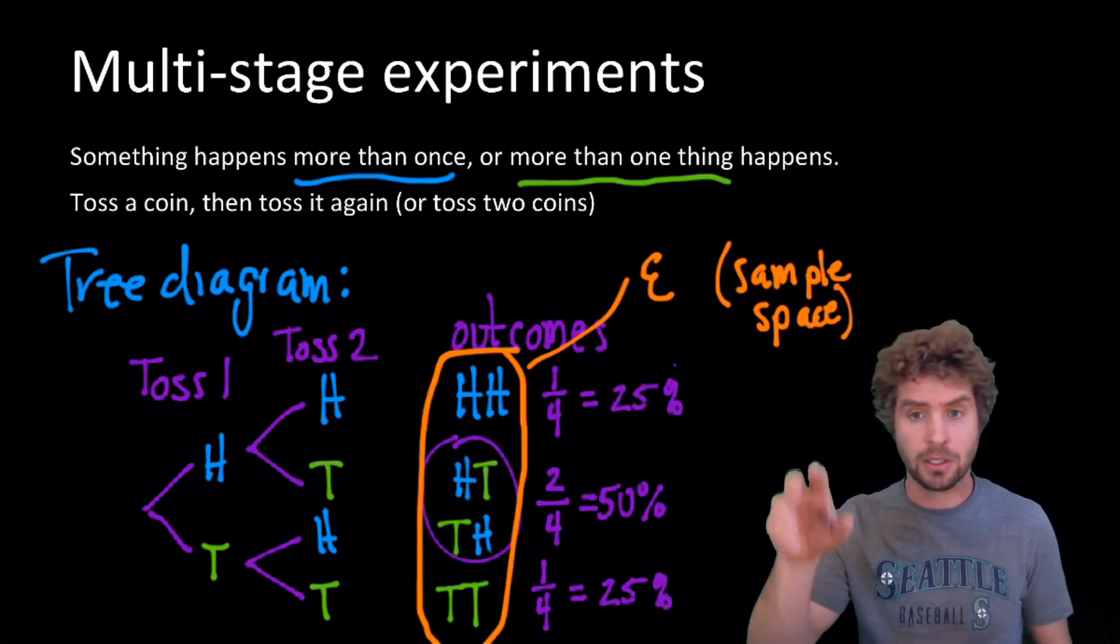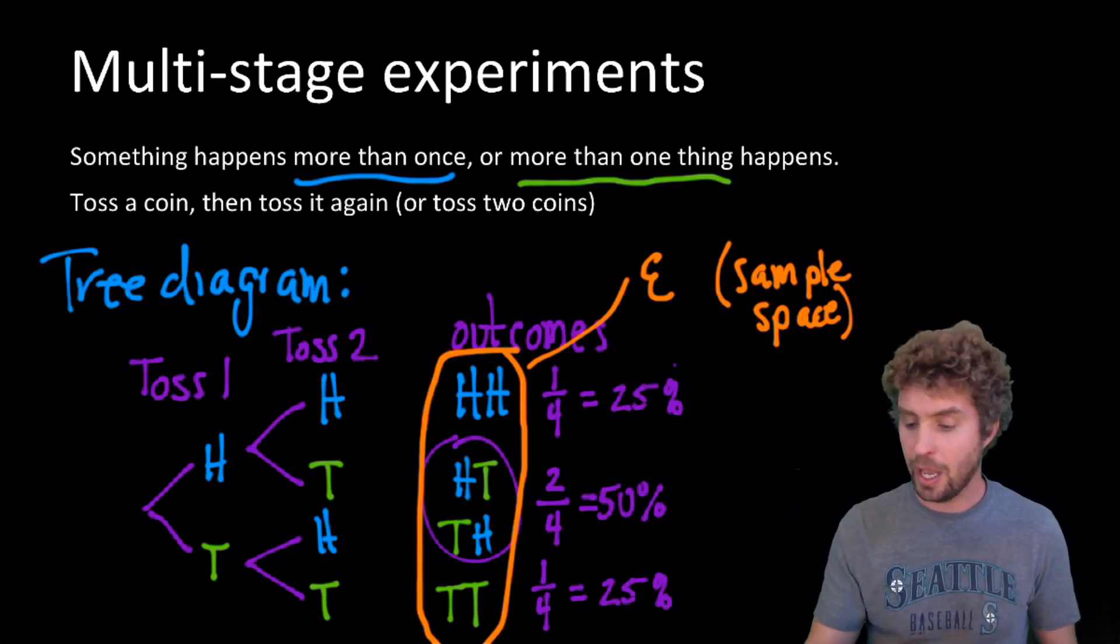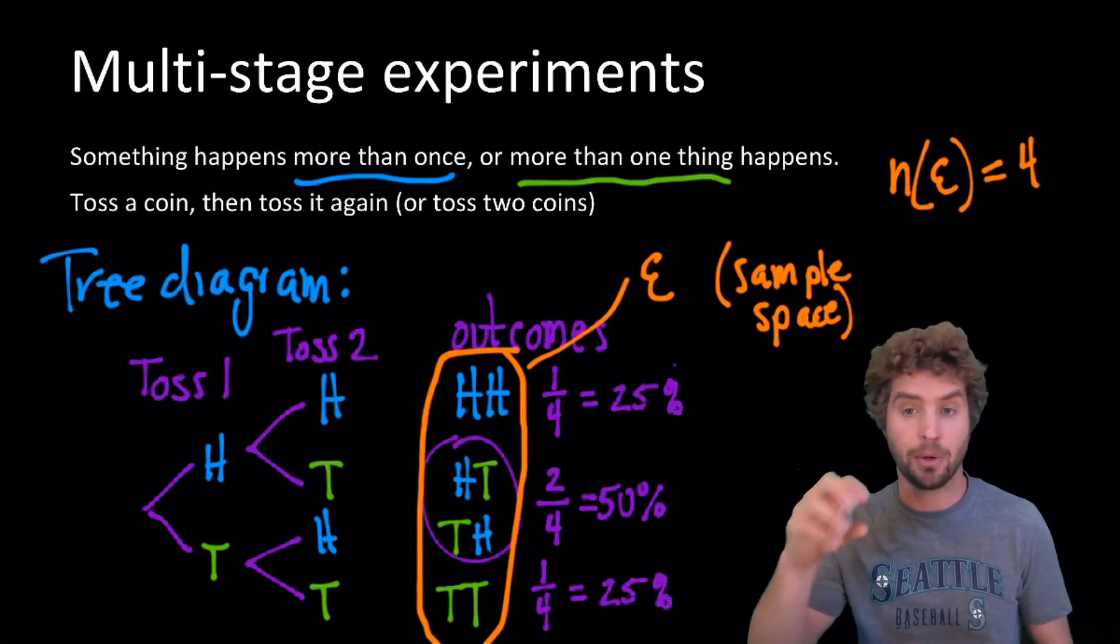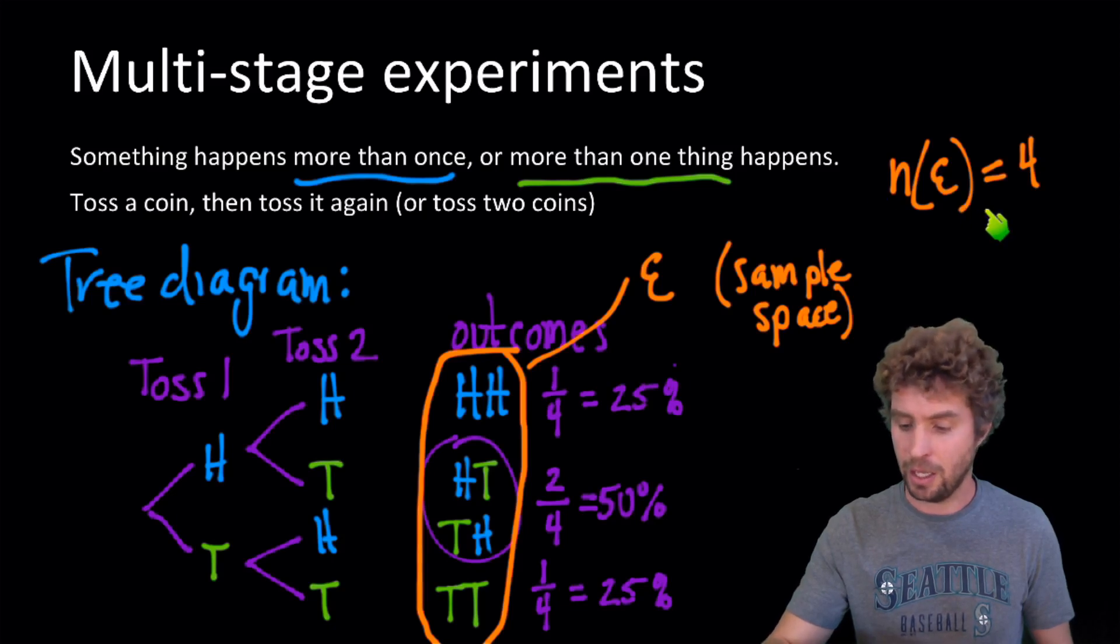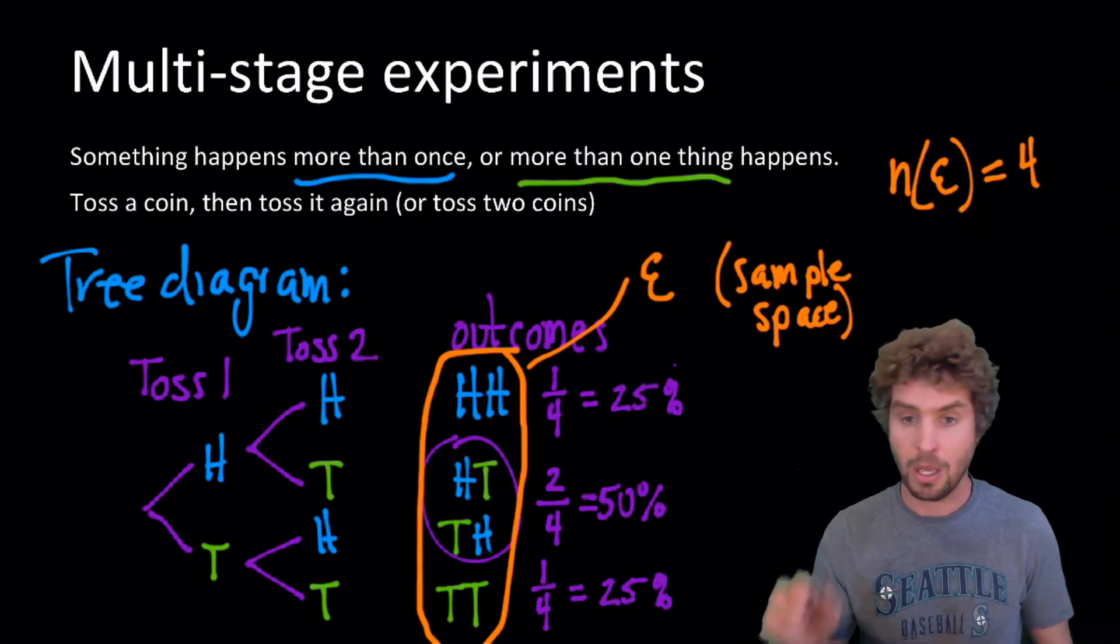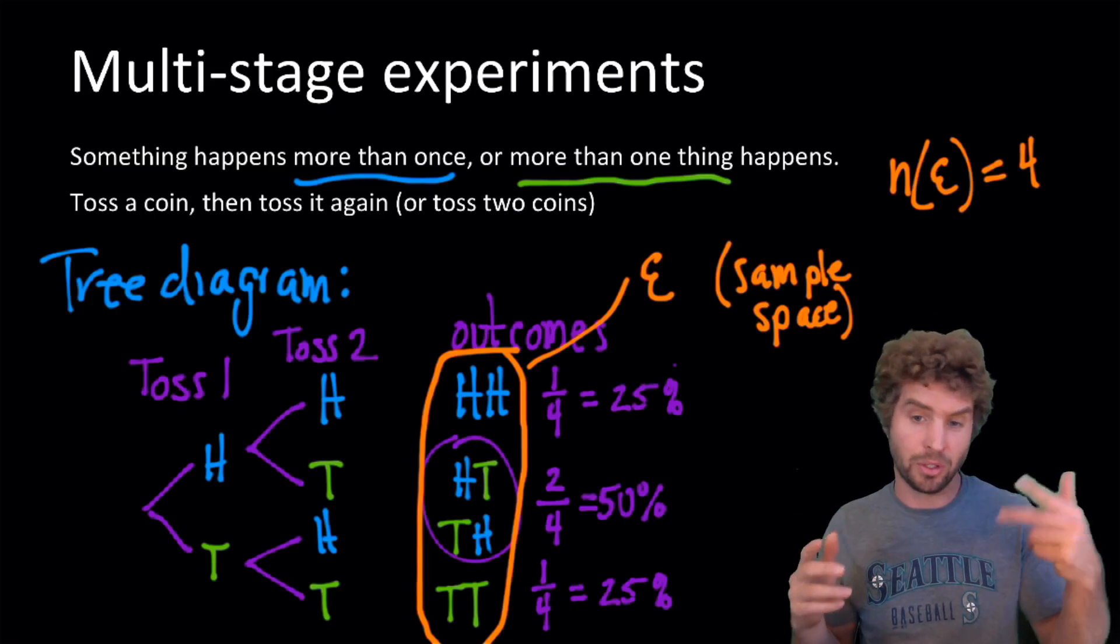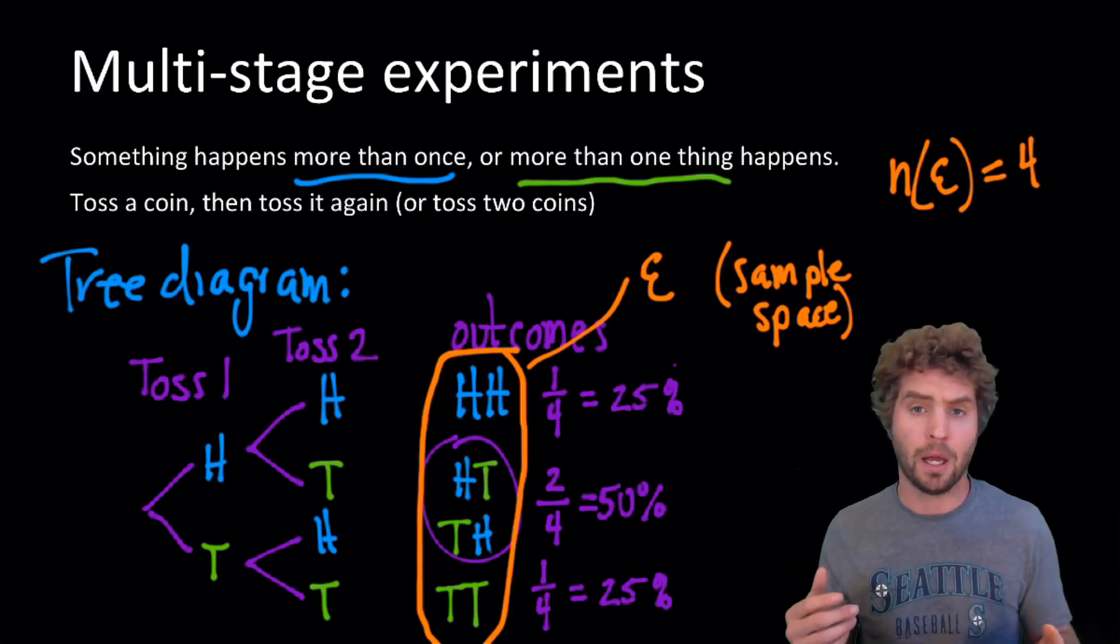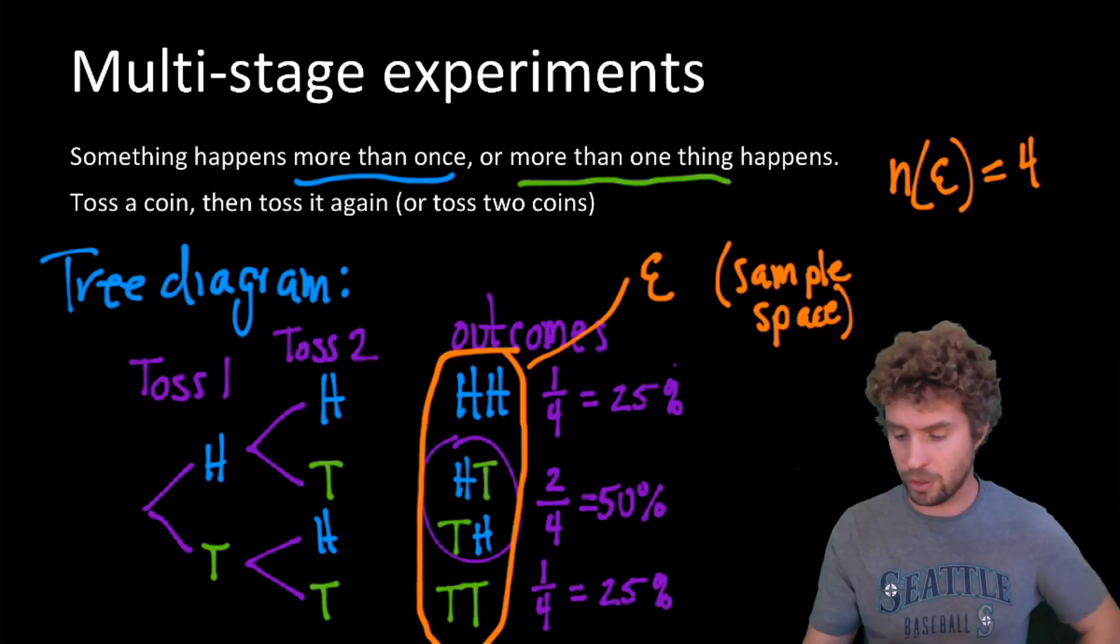This list of outcomes is our sample space with a sigma. And, there are four things in the sample space. So, the number in the sample space is four. Okay. That's pretty much the idea. That's how it goes. It can get a little more complex. We can have things with more than two outcomes for each trial or whatever. And we can have things, we can do things more than twice as well. So, we'll look at a little bit of each of those.